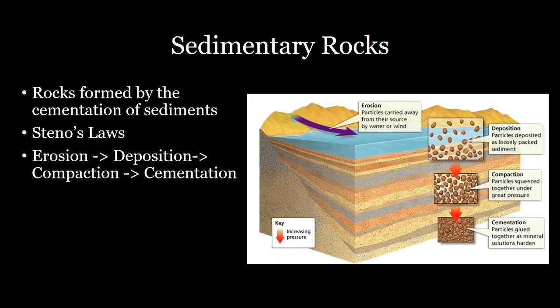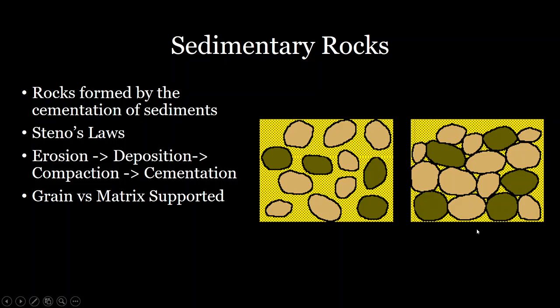Sedimentary rocks form first by formation of sediment. You have to have erosion that turns bedrock into sediment, then transport of that material by a river or some other process, then deposition — maybe at the ocean floor. As more sediment piles on top, you have compaction and finally cementation when sediment grains fuse together.